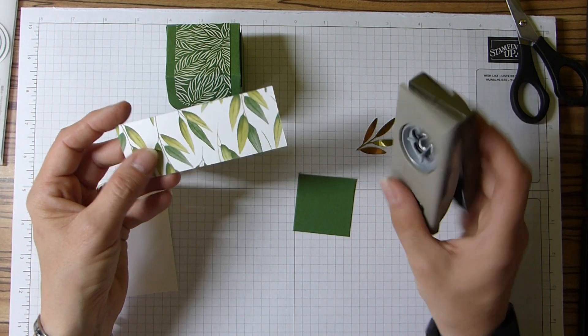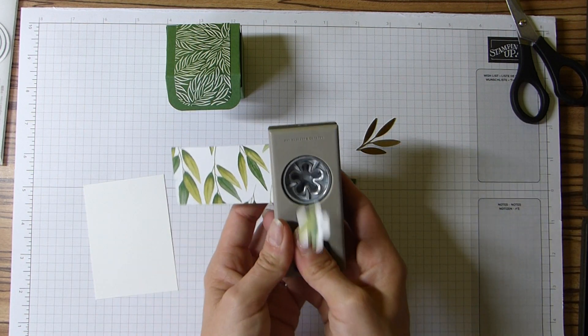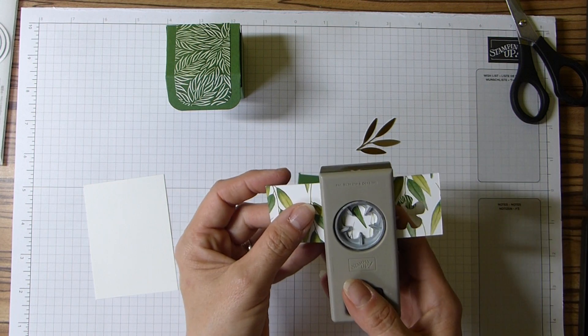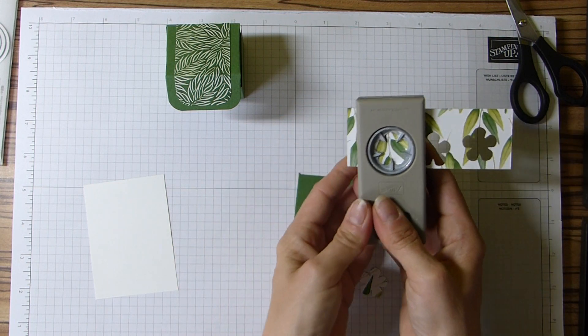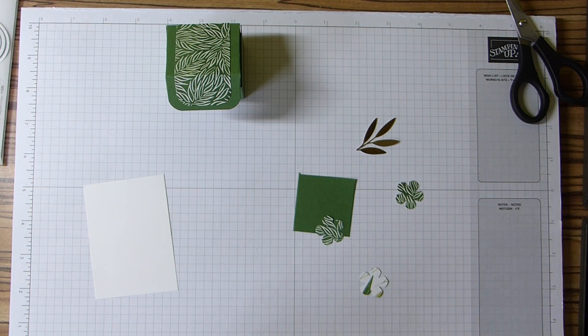This is for the small bloom punch, and I actually am using, if you like, the reverse of the paper just to create three small flowers.